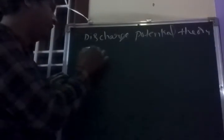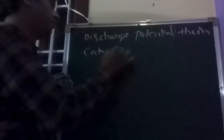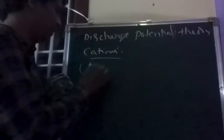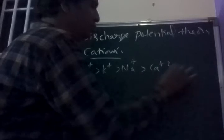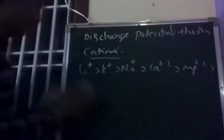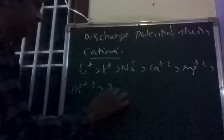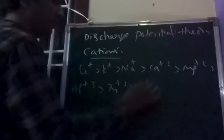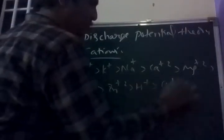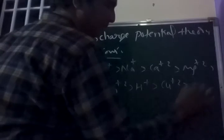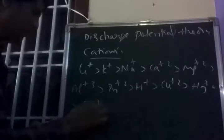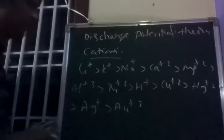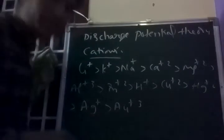The discharge potential order of cations is: La³⁺ > K⁺ > Na⁺ > Ca²⁺ > Mg²⁺ > Al³⁺ > Zn²⁺ > H⁺ > Cu²⁺ > Hg²⁺ > Ag⁺ > Au³⁺. This is the discharge potential order of cations.